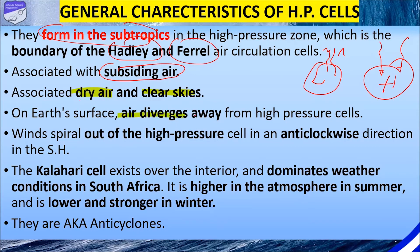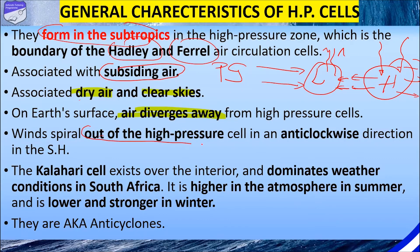On the Earth's surface, air diverges away from the high pressure cells — it's the opposite of what happens with low pressure, where air converges. With high pressure the air diverges in all directions because it's going towards the low pressure. Remember from grade 11: air always moves from a region of high pressure to a region of low pressure. That's why with high pressure we have divergence, whereas with low pressure we have convergence.